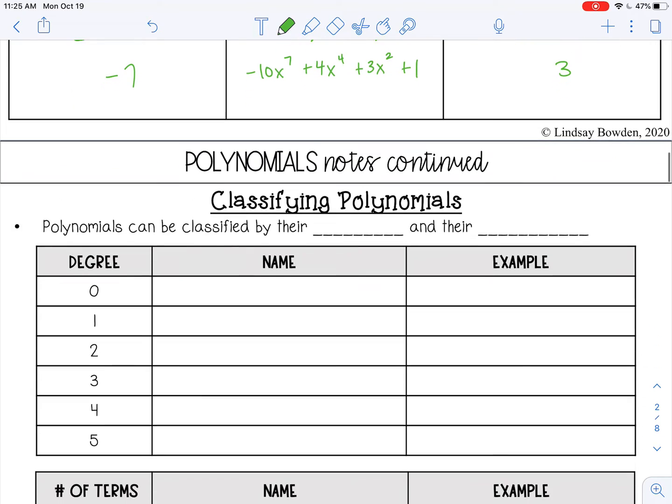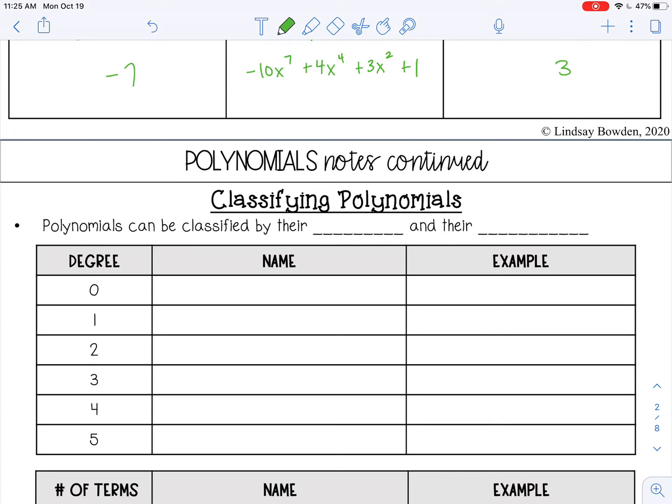All right, let's talk about how to classify polynomials. So polynomials can be classified by their degree, which remember is the highest exponent, and by the number of terms.